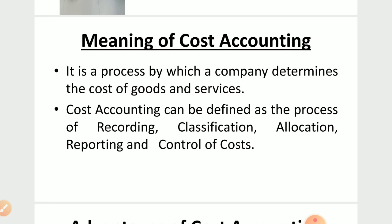Basically, we see that it is cost accounting. It is a process by which a company determines the cost of goods and services. Cost means expense, right? If you buy something, how much money you spend? In the same way, when a company does cost accounting, it is a manufacturing company or industry.